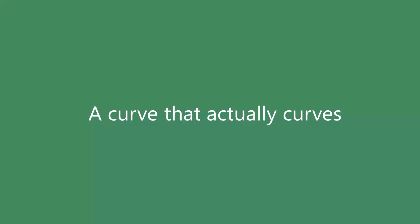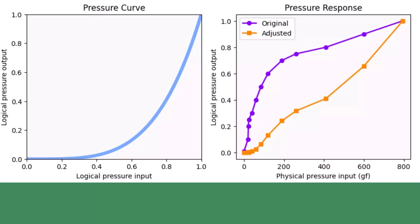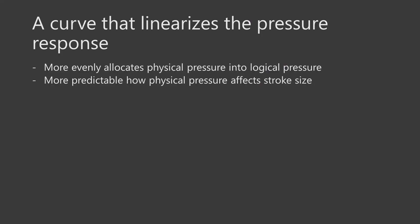So far, all the pressure curves I've shown you haven't looked like curves at all — they've all looked like lines or line segments. But this one clearly bends downwards. The effect this curve has on the pressure response is that it makes the response more linear — not perfectly linear, but close enough. So with this curve, we get a pressure response that gives more predictable changes in the width of the stroke as physical pressure changes. In the language of resource allocation, this specific curve combined with this specific pressure response gives a new pressure response that more evenly allocates the physical pressure range into the logical pressure range, with no dramatic steep or shallow slopes. This is clearly another example where the pressure curve does not look like the pressure response it creates.